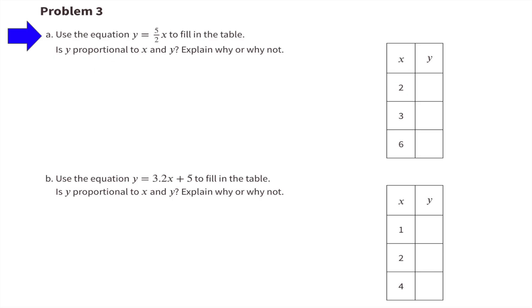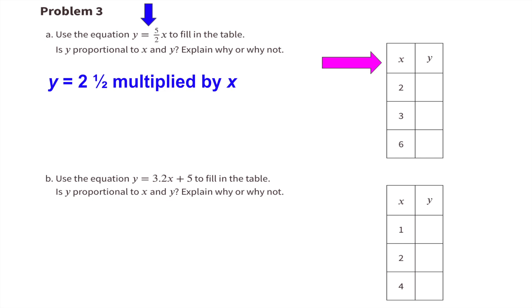Number 3, Part A: use the equation y equals 5/2 times x to fill in the table, then determine if y is proportional to x. 5/2 is the same as 2 and a half, because 5 divided by 2 is 2.5. So y equals 2.5 multiplied by x.